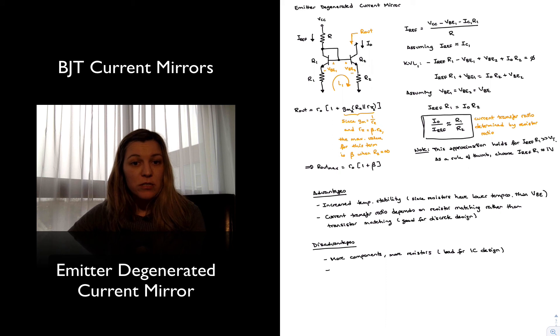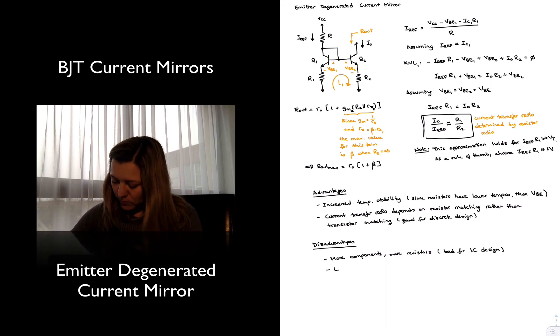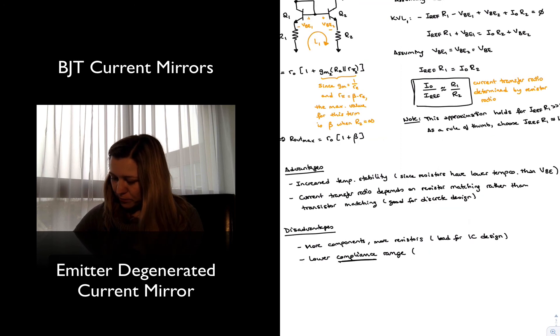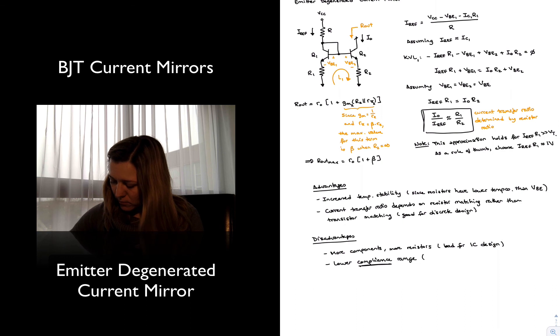Except when you're talking about the output voltage range for a current source, you typically refer to it as the output voltage compliance, the compliance of the current source, meaning the range of output voltages for which the current source will operate. And so lower compliance range. Compliance we are referring to range of output voltage values. And again, this is due to voltage drop across R2.